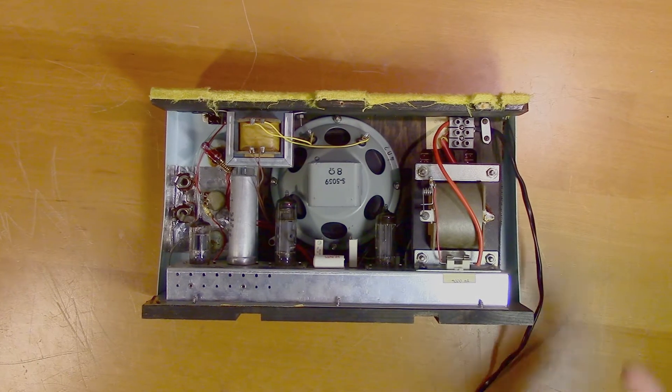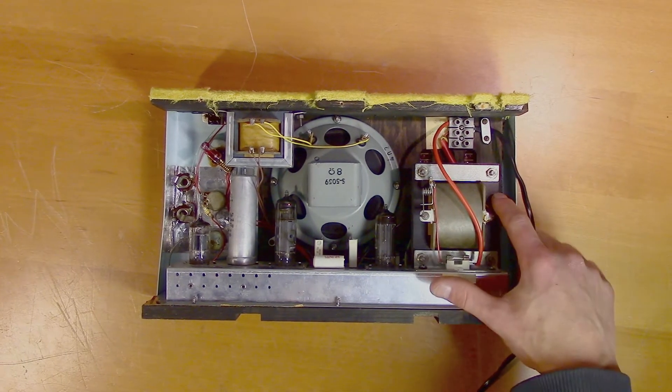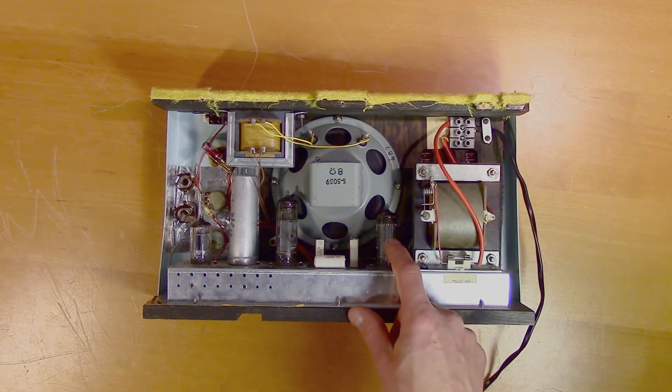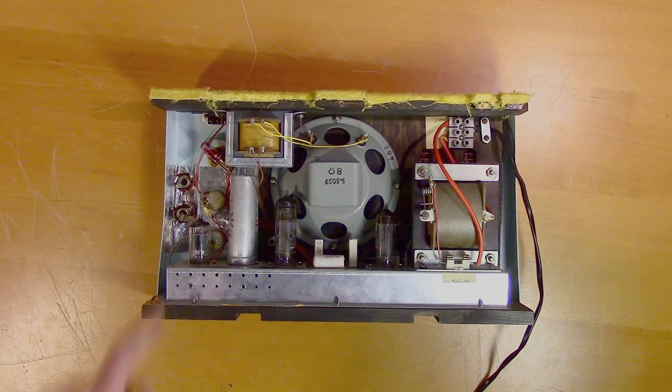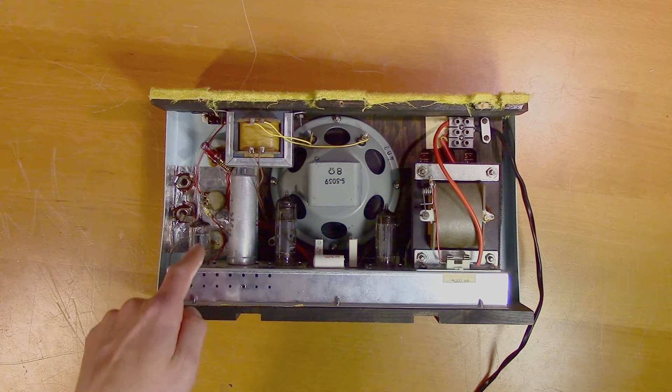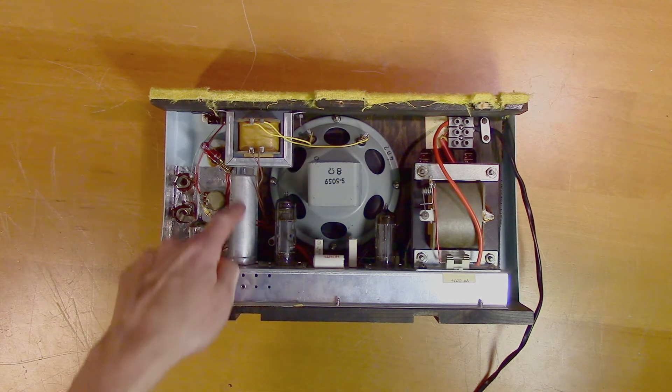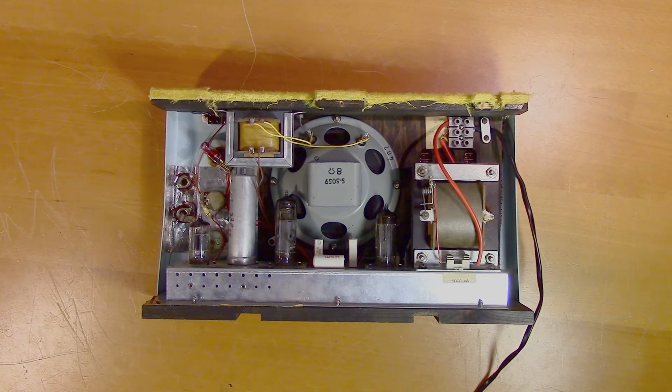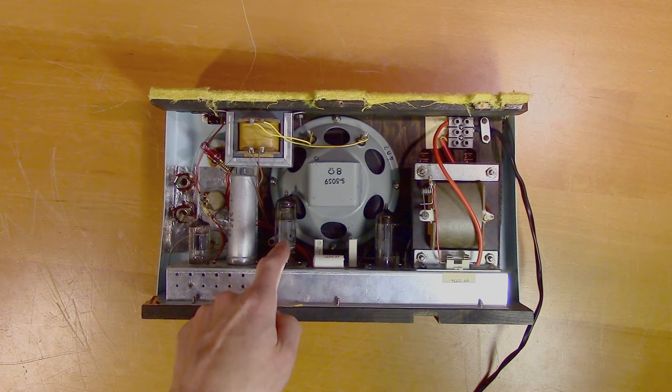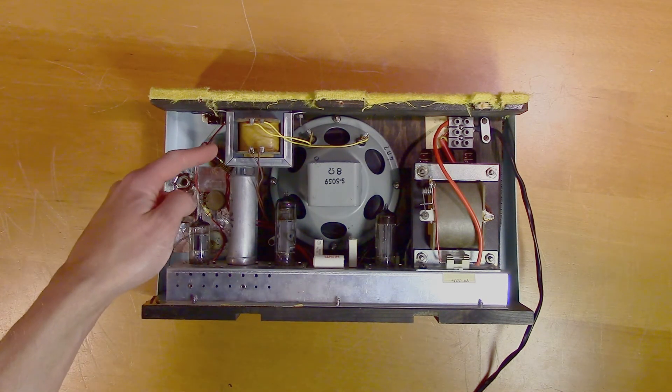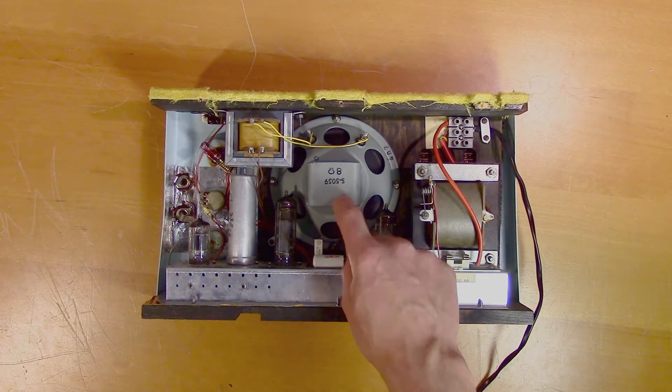Okay so let's get a quick overview. Here we have the mains transformer, here we have the rectifier tube which is an EZ80. Here we have an ECC83. This is used for the preamplifier and tremolo. Here we have the large electrolytic capacitors used for the power supply output. Here we have an EL84 which is used as the output tube. Here we have the output transformer and here we have the speaker element.